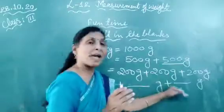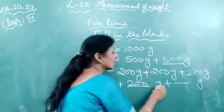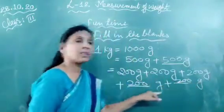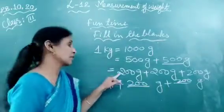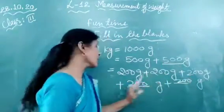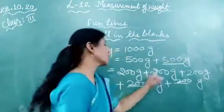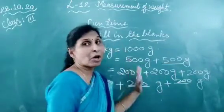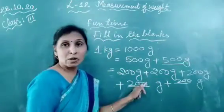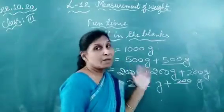400 grams plus 200 grams gives us a total equal to 1 kilogram — that is 1000 grams. So this is how we fill up the blanks: 1 kilogram equals 1000 grams.